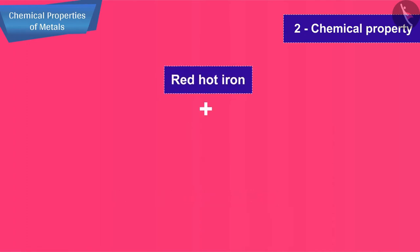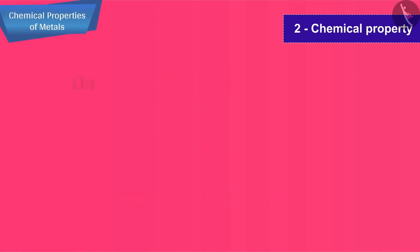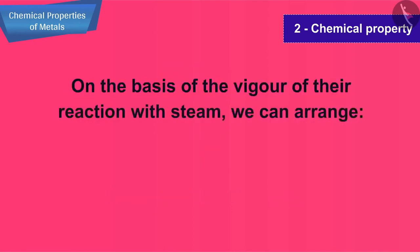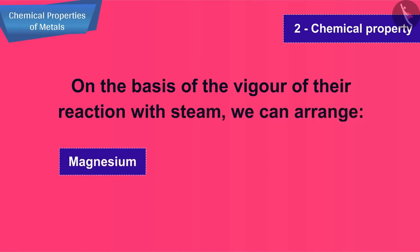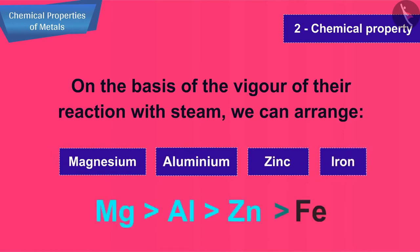Red hot iron reacts with steam to form iron oxide and hydrogen gas. On the basis of the vigour of their reaction with steam, we can arrange magnesium, aluminium, zinc and iron metals in the decreasing order of their reactivity.